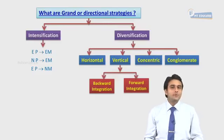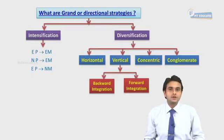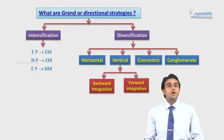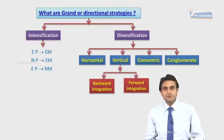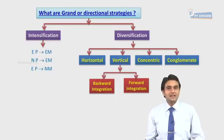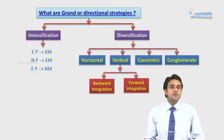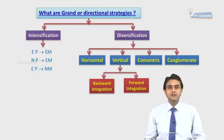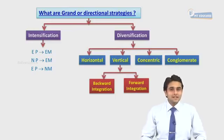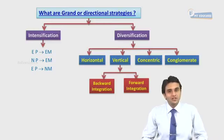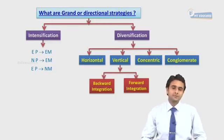I hope we are clear with horizontal and vertical diversification. Concentric diversification is simply what MTA Educare is into — the products are interrelated and the same facilities can be used for manufacturing multiple products. MTA Educare is only into educational products, which is nothing but concentric diversification, where the products are closely connected.